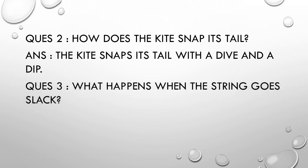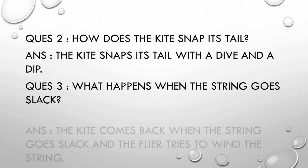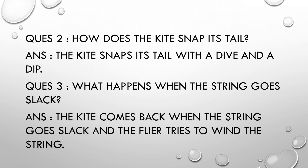Question 3: What happens when the string goes slack? Answer: The kite comes back when the string goes slack, and the flyer tries to wind the string. When you find the string has gone loose, the kite starts coming back to you and you begin winding the string onto the tool in your hand.